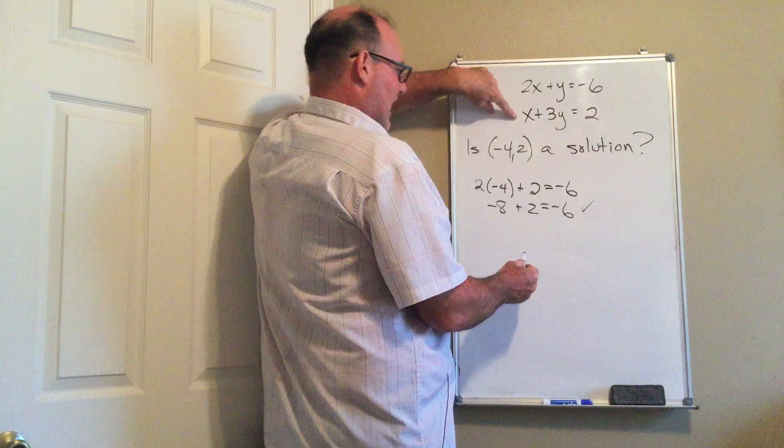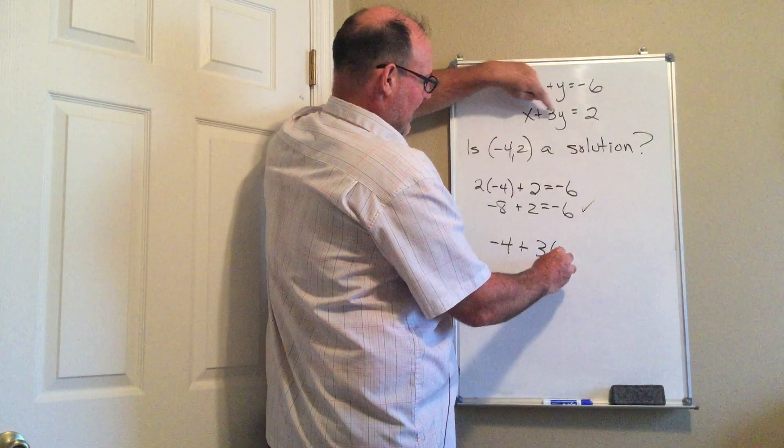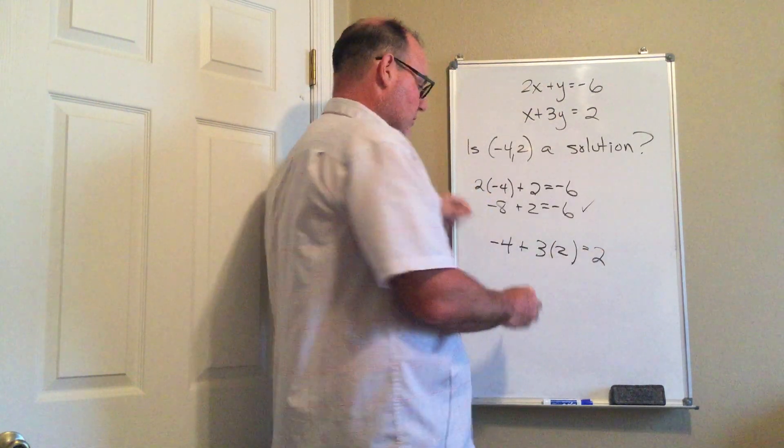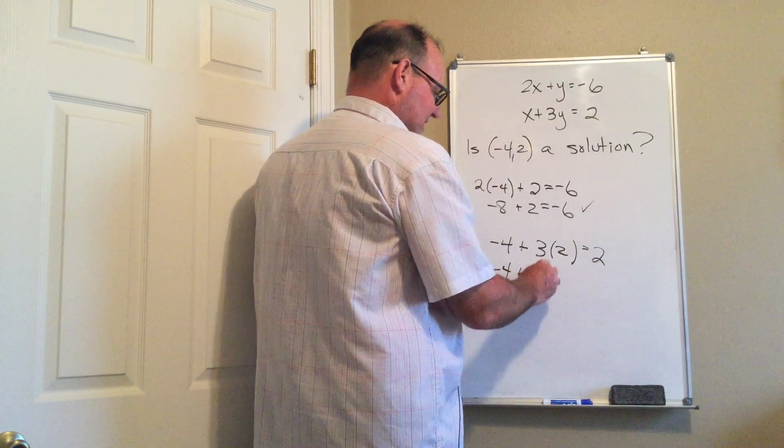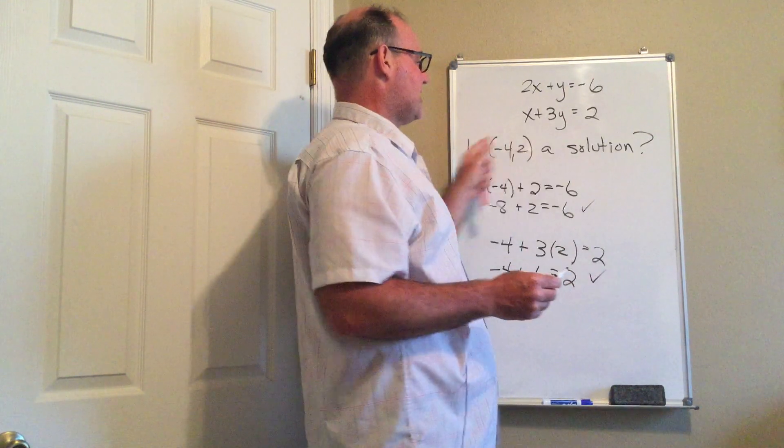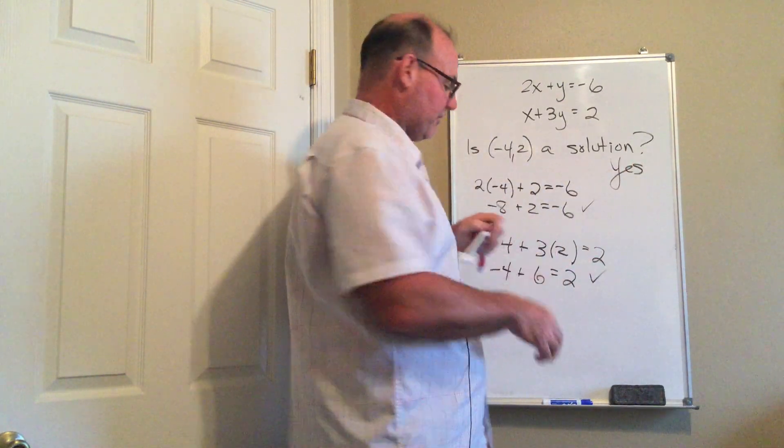Now for the second equation I have (-4) plus 3 times the y value, 2, and I want to know if that equals 2. So (-4) plus 6 is equal to 2. (-4) plus 6 is 2. So yes, (-4, 2) is a solution. It satisfies both equations.